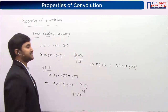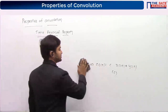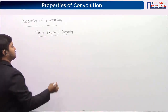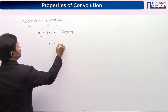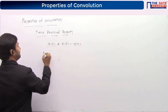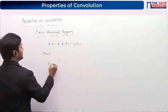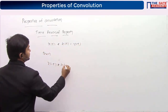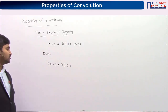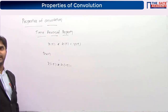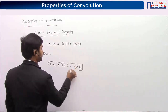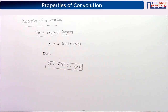So that is option C. Next is the time reversal property. If x(t) convolved with h(t) is y(t), then x(-t) convolved with h(-t) equals y(-t).